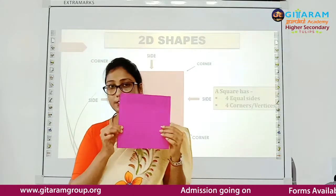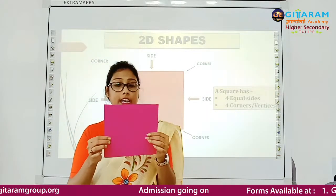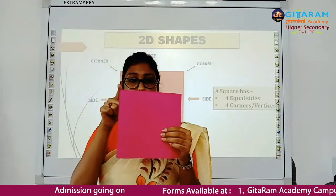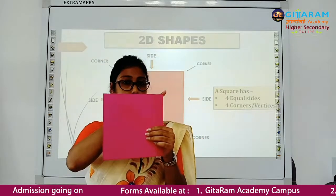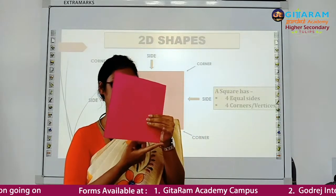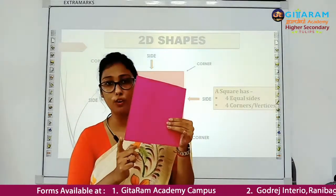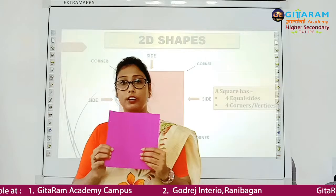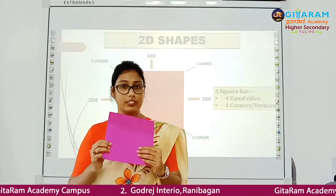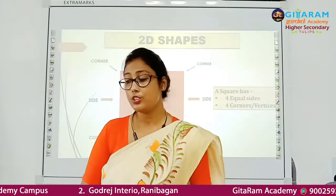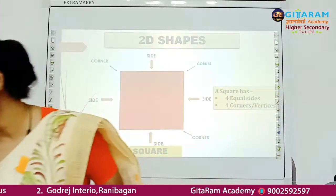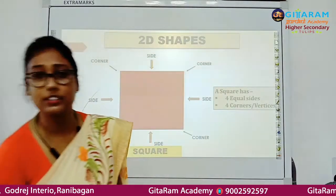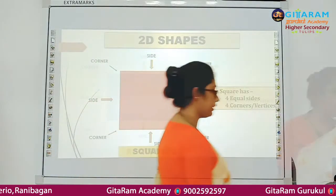All sides of a square are equal. It has four corners or vertices: 1, 2, 3, 4. So a square has four equal sides and four corners or vertices.